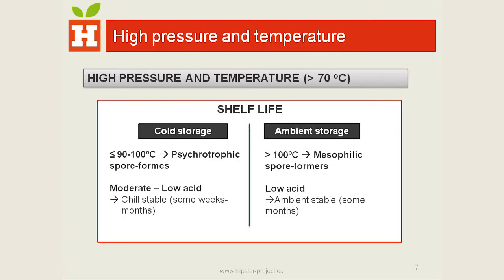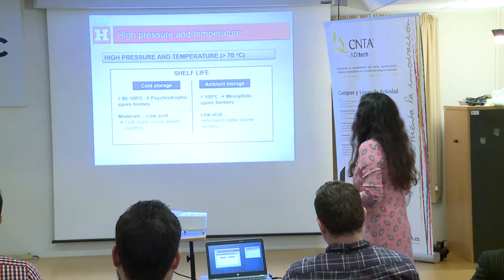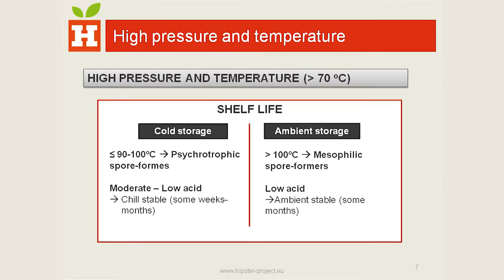The storage conditions and shelf life we can obtain with this combined treatment depend on the intensity of the treatment. If we apply temperatures up to 90 to 100 degrees, we can inactivate psychrotrophic spores and obtain products stable under cold conditions for several weeks or even months. But if we increase the temperature above 100 degrees, we can inactivate mesophilic and even some thermophilic spores, and then obtain low acid food products stable at room temperature. This is the main advantage of this technology — we can inactivate sporulated microorganisms with this combined treatment.